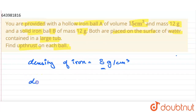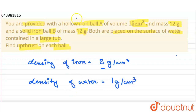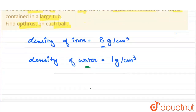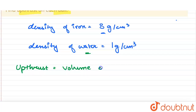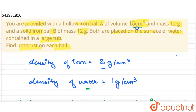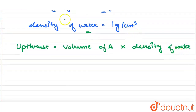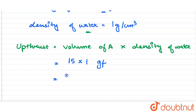Both balls will be immersed in water because their density is greater than the density of water. So we need to find the upthrust. For ball A, upthrust equals volume of A multiplied by density of water. Volume of A is 15 cm³ and density of water is 1 g/cm³, so upthrust = 15 × 1 = 15 gf.